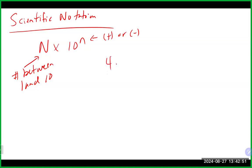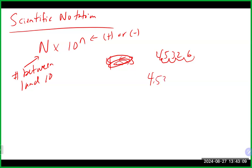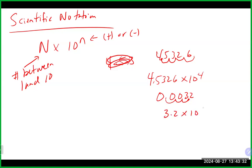For example, 453,426 — we assume the decimal point is at the end. Moving 1, 2, 3, 4 places to the left gives us 4.5326 times 10 to the 4. If it's a large number, you have a positive exponent. If it is a small number, you will have a negative exponent. So for 0.0032, we go 1, 2, 3 places to the right to get 3.2 times 10 to the minus 3.